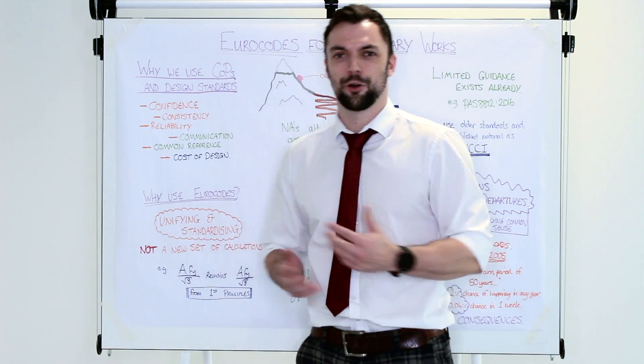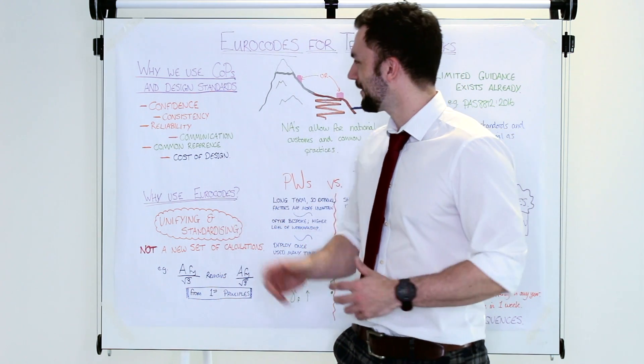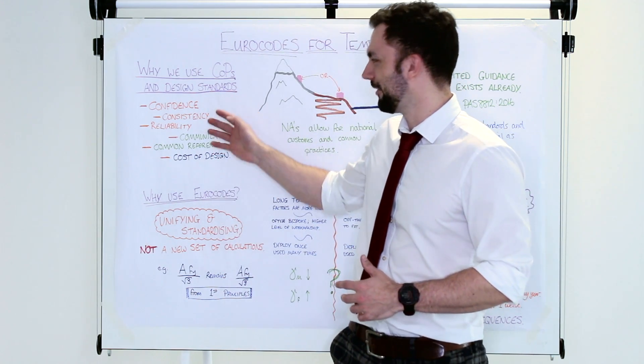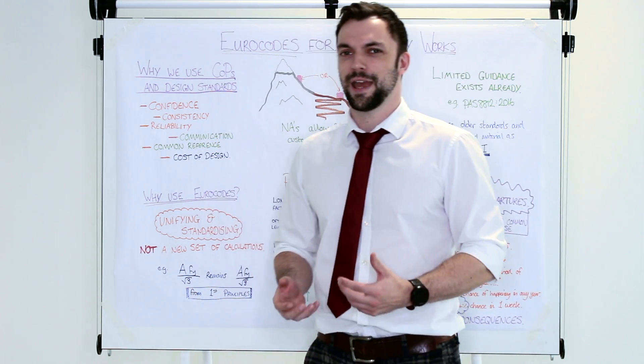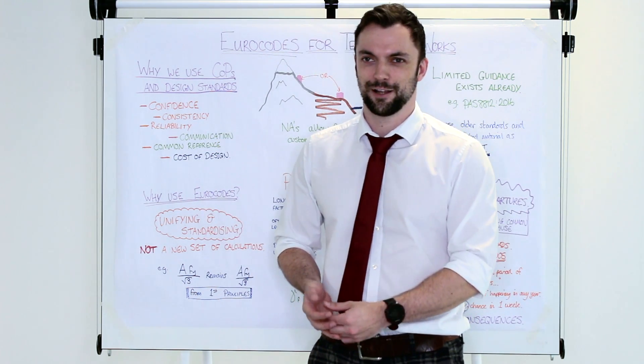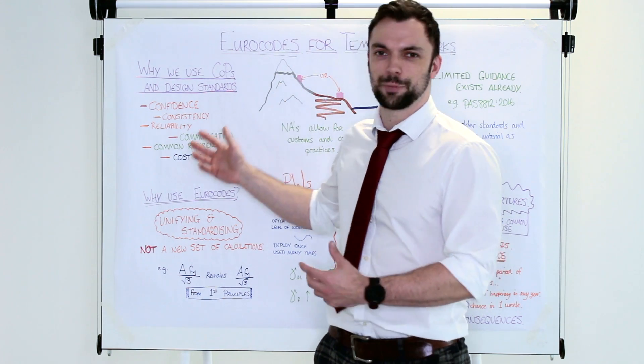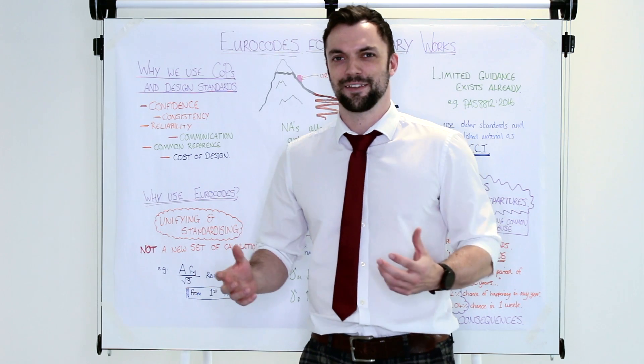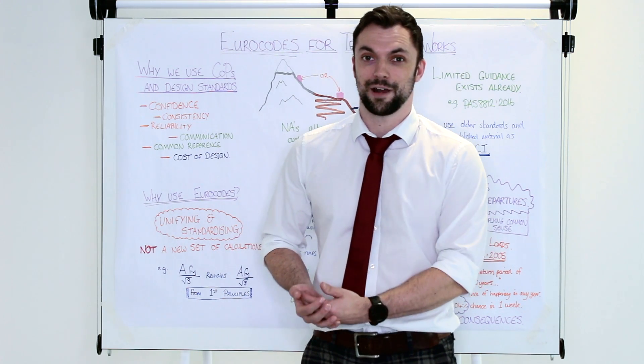Just start off talking about codes of practice and design standards in general and why do we use them. Really it's to give us confidence in what we're doing, consistency and reliability. If you were to just work everything out off the top of your head you'd constantly be second-guessing yourself, have I really checked everything? So if you put it down into a code of practice or a design standard it's the best minds in the industry have got together and agreed that if we do it this way we know we've done it right.